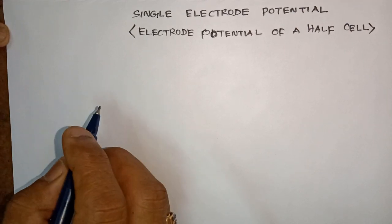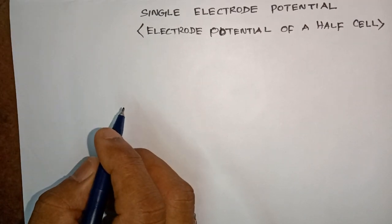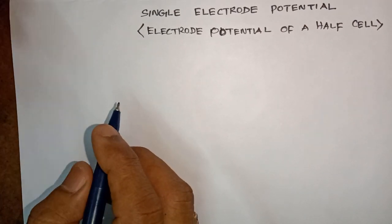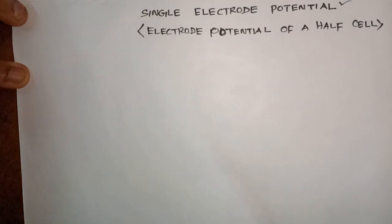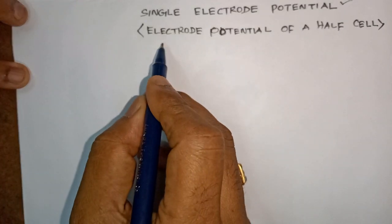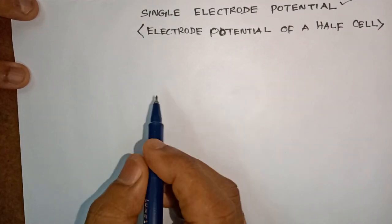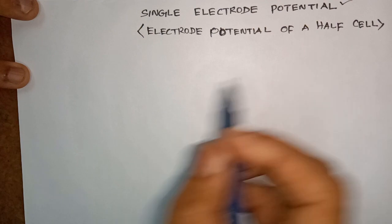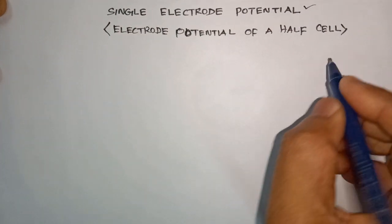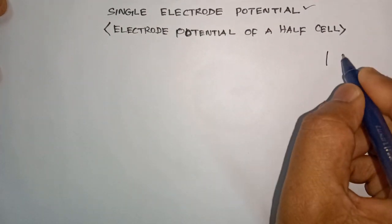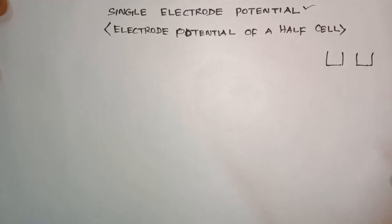Welcome to my channel. Today we see single electrode potential. The single electrode potential can be called as the electrode potential of your half cell. Suppose I take an electrochemical cell — an electrochemical cell is made up of two half cells.